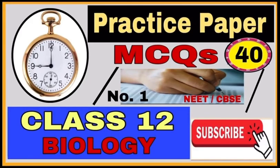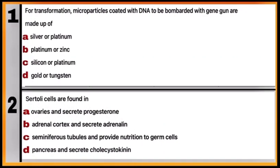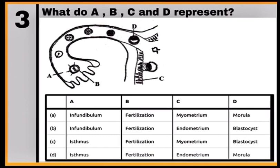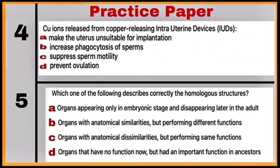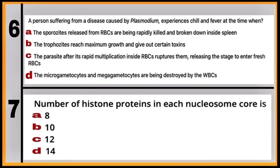Hello students, this is Practice Paper Number 1 having 40 MCQs. All questions are from the complete Class 12th syllabus. The answer key is provided at the end of the video. Read NCERT line by line to score 70 out of 70.